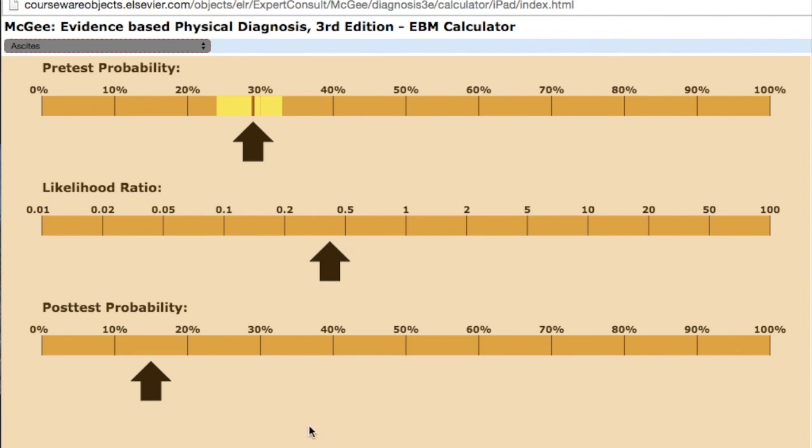Finally, I wanted to talk about the puddle sign, a test that is uncomfortable and embarrassing for patients. Remember we said it had a positive likelihood ratio of 1.3. Now that would take your pre-test probability from 30% to just under 40%, subjecting your patient to quite a bit of discomfort for something that's going to change your thought about ascites by less than 10%.